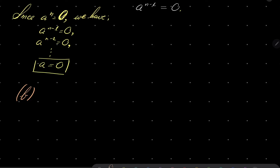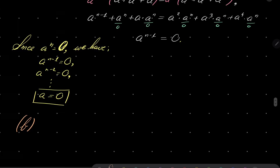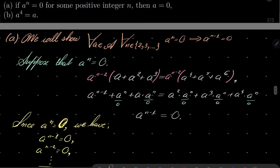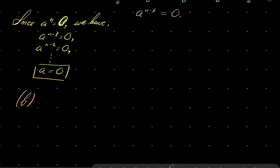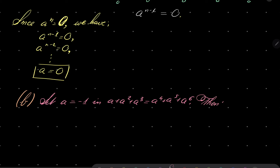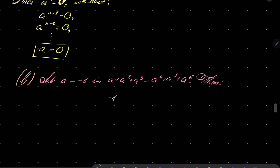Now for part B, what we wish to show is that A to the 4th power equals A for every element. First, what I will do is set A to be minus 1 in our assumption. Then we have the following: minus 1 plus minus 1 squared plus minus 1 cubed equals minus 1 to the 4th power plus minus 1 to the 5th power plus minus 1 to the 6th power.